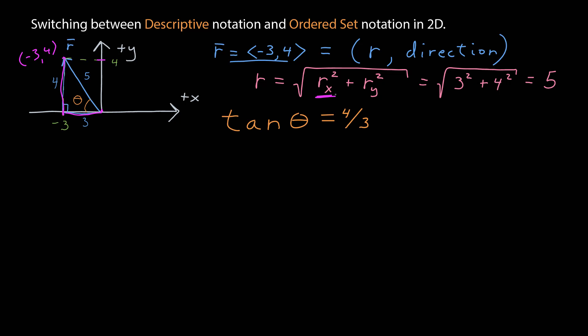I know that the tangent of that angle theta is equal to the opposite over the adjacent and the lengths of those are 4 and 3 and so I can use that to find out that the angle is 53.13 degrees. I now have a descriptive notation for my vector.